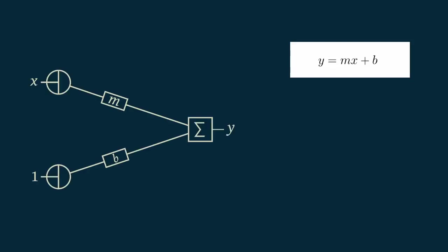We can represent this in a picture. Our input value x is multiplied by m. Our constant b is multiplied by 1, and then they get added together to get y.